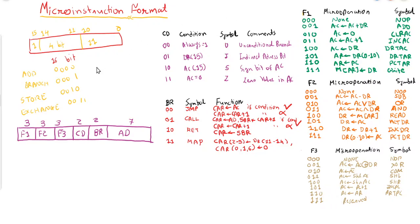So all of these are the micro operations. If there is a need to implement an instruction, it should be implemented using the micro operations from Field 1, Field 2, and Field 3.